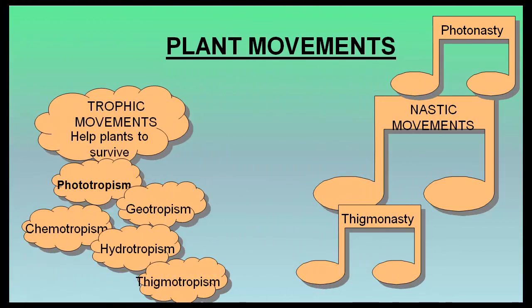Two types of movements are seen in plants. Tropic movements are directional growth movements in response to an external stimulus, and they help the plants to survive. Nastic movements are non-directional movements of growth that are determined by the structure of the responding organ, irrespective of the direction of stimulus.